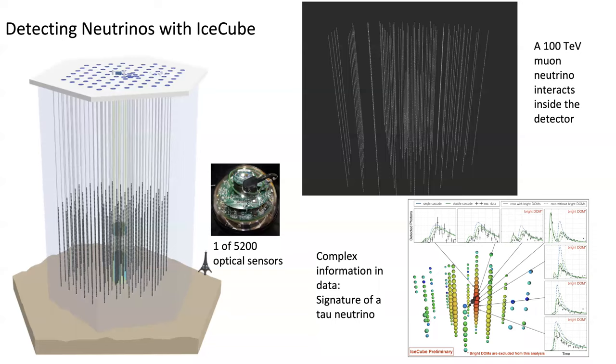To detect these energetic neutrinos, we built the IceCube Neutrino Observatory at the South Pole. It consists of more than 5,000 optical sensors within one kilometer cubed of clearest ice.